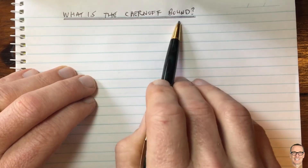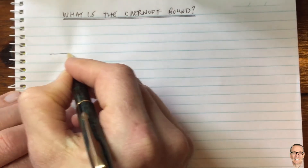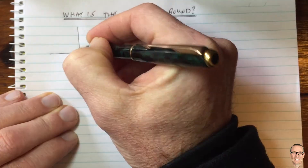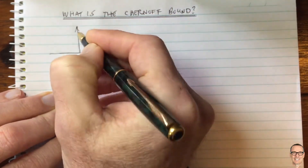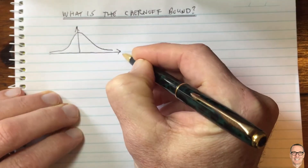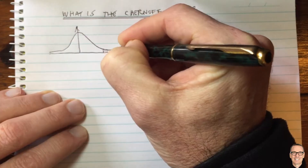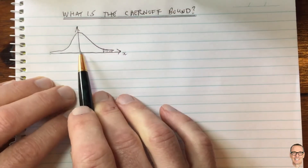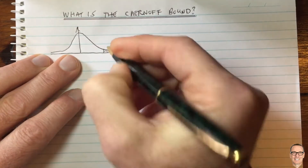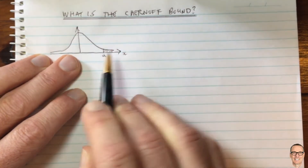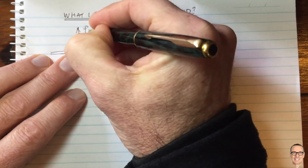What is the Chernoff bound and when is it useful? Let's look at a Gaussian PDF. It's often the case that we're interested in the probability that an outcome from the random variable is a big number — for example, in digital communications, if we have Gaussian noise, we're interested in the probability of getting a big value of noise larger than a certain value a, and that is the area under the PDF.